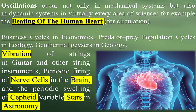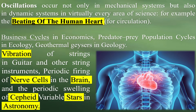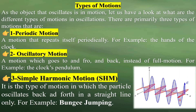Oscillations occur not only in mechanical systems but also in dynamic systems in virtually every area of science. The simplest mechanical oscillating system is a weight attached to a linear spring subject to only weight and tension. The systems where the restoring force on a body is directly proportional to its displacement, such as the dynamics of the spring-mass system, are described mathematically by the simple harmonic oscillator, and the regular periodic motion is known as simple harmonic motion.